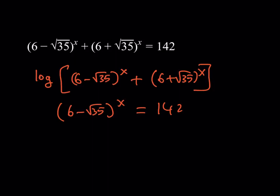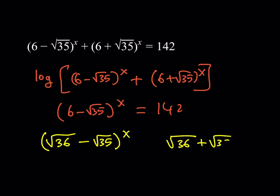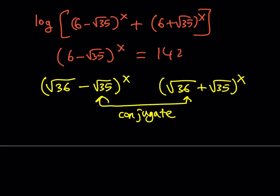The idea is to notice that there's a relationship between the bases. One of them is 6 minus root 35 and the other is 6 plus root 35. This becomes clearer if you write 6 as the square root of 36. Then you can see that these two expressions are conjugates — and what does that mean? If you multiply conjugates together, you get something nice.